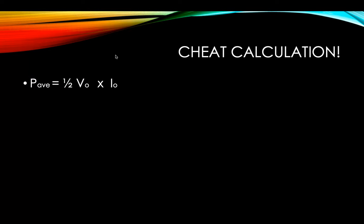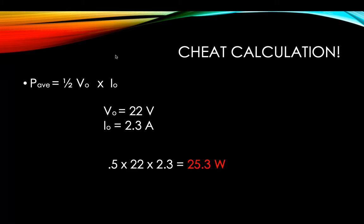There is a shortcut to this calculation. If you know the peak voltage and the peak current, you can plug them into this equation and get the same exact value as doing it individually — finding V-naught over the square root of two and I-naught over the square root of two and multiplying those two. We can skip that step. Our peak voltage V-naught is 22 volts and our peak current I-naught is 2.3 amperes. So 0.5 times 22 times 2.3 gives us again the same value of 25.3 watts.